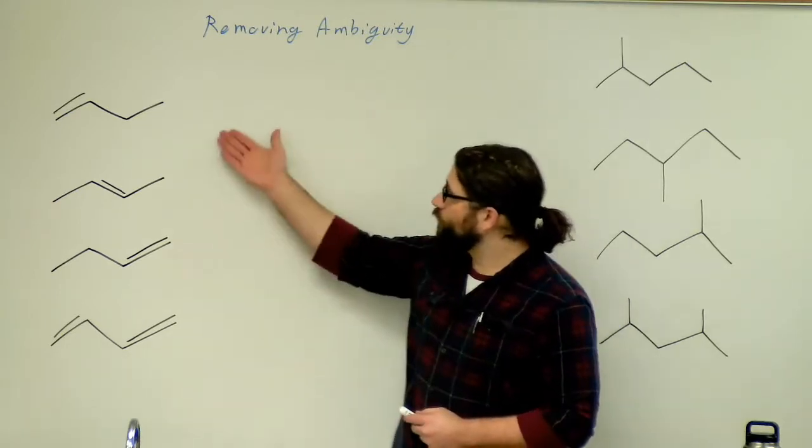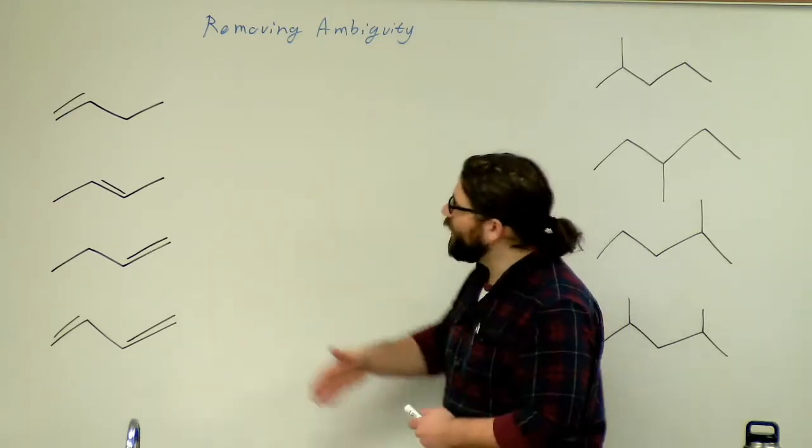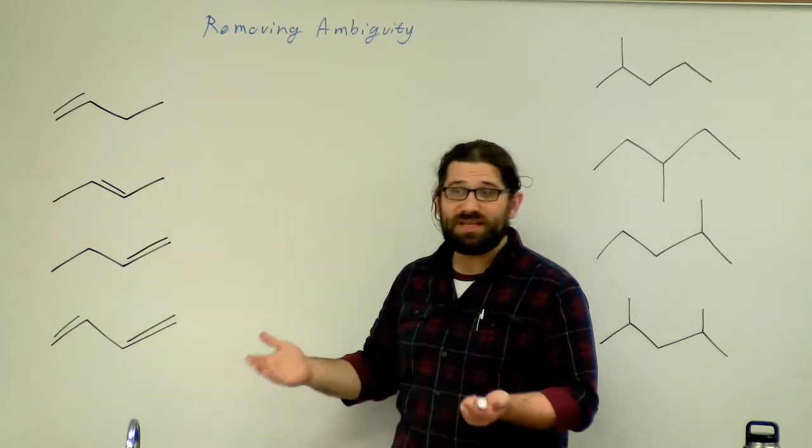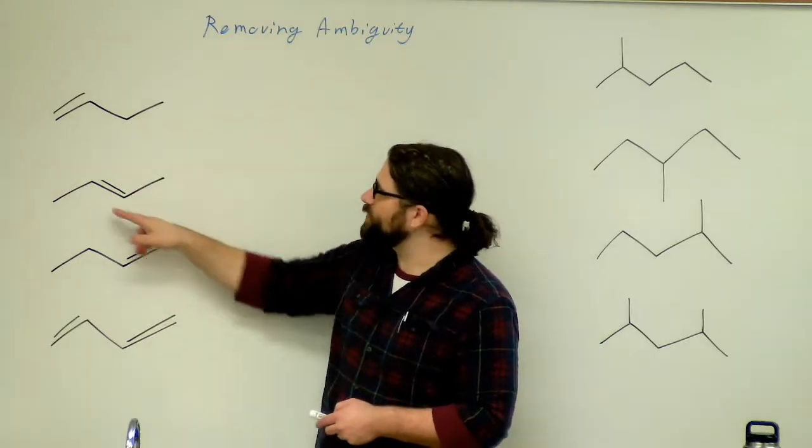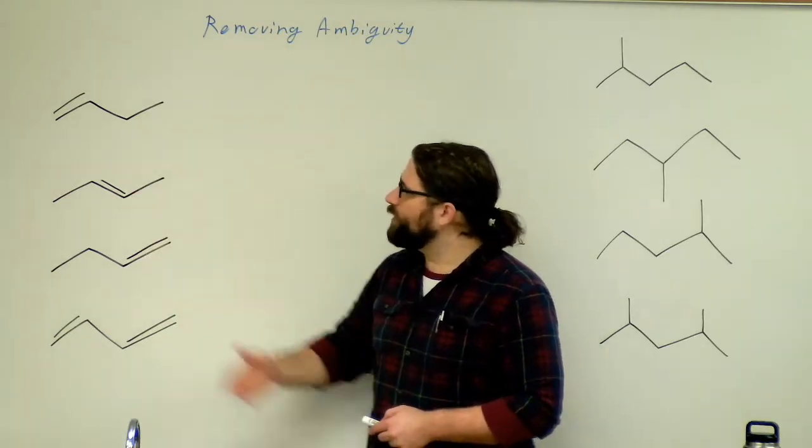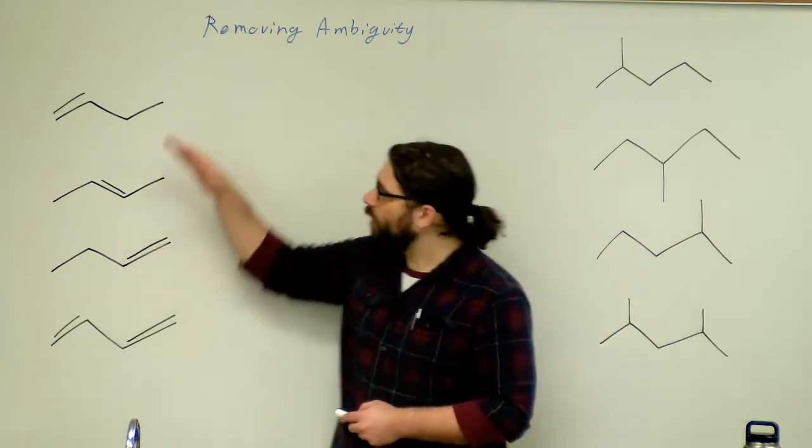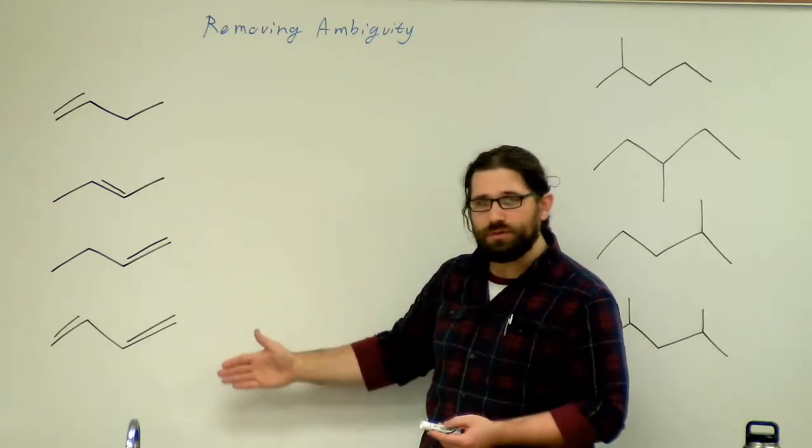For example, on the left side of the board here, I have four versions of butene. Each one has a double bond, but each of these double bonds is in a different place. So how can I name all four of these butene?